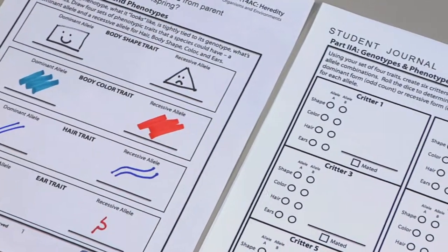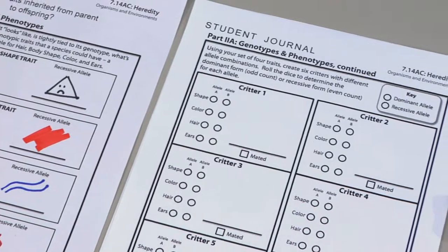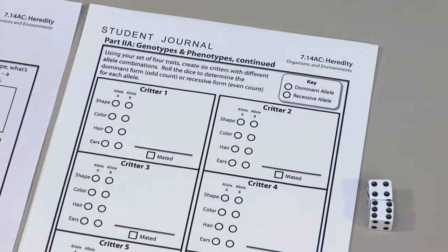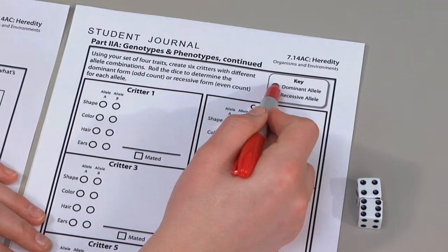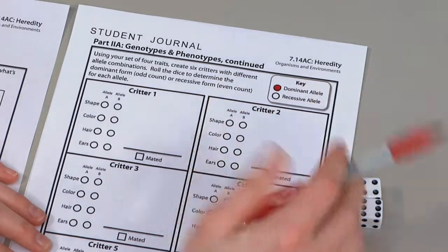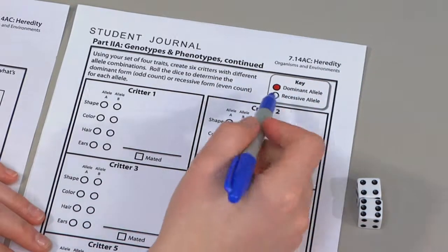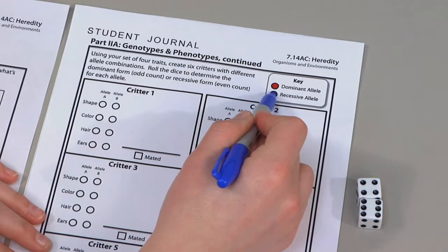From these phenotypic sets, create six critters with different allele combinations. To fill in the key at the top of the journal page, use one color of marker to represent the dominant allele and another color to represent the recessive allele.